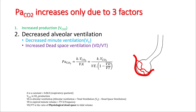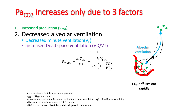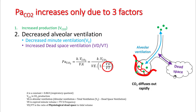In the previous lecture we understood that carbon dioxide increases only because of two reasons: increased production or decreased alveolar ventilation. We also learned that CO2 diffuses out of capillaries into the alveoli pretty rapidly. So the problem is getting this carbon dioxide out of the alveoli, and this is achieved by alveolar ventilation. Your CO2 will increase if there is decreased minute ventilation or increased dead space.